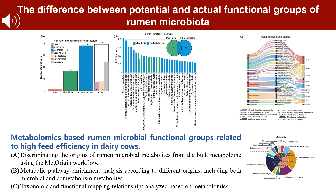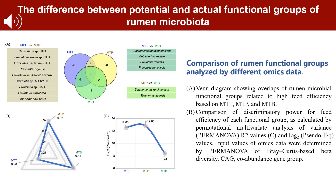Our findings revealed 10 KEGG pathways associated with 25 microbial species from 13 families, with S. ruminantium showing the most differential functions. The Sankey diagram also showed significant redundancy. We compared three functional group levels using a Venn diagram and found minimal overlap, with MTT and MTP sharing nine species, including Prevotella bryantii and Selenomonas bovis.